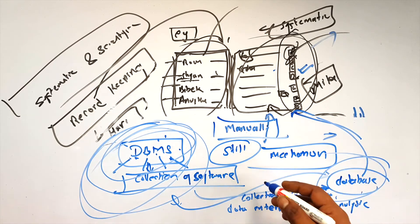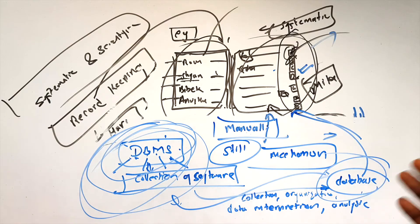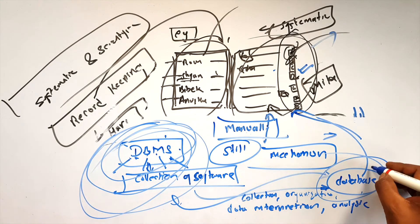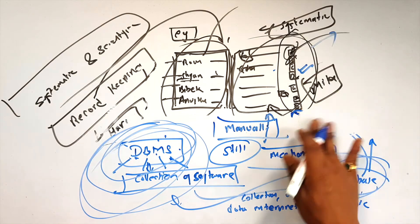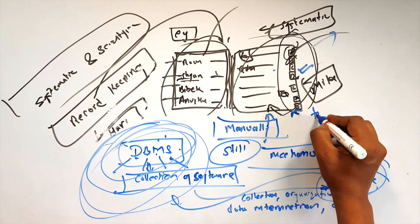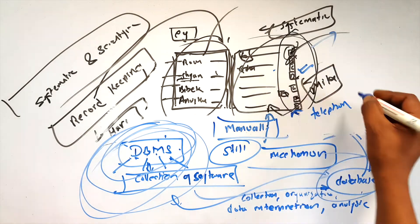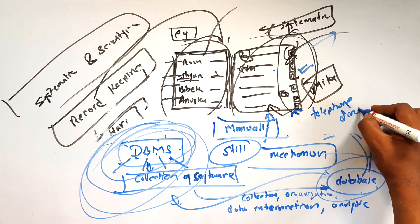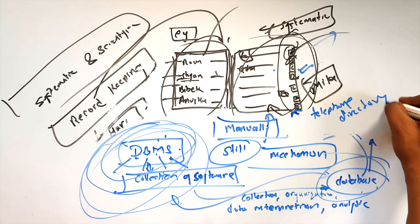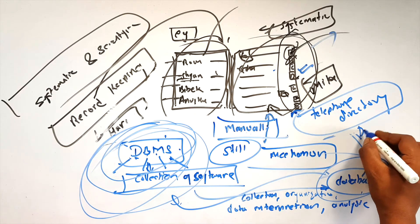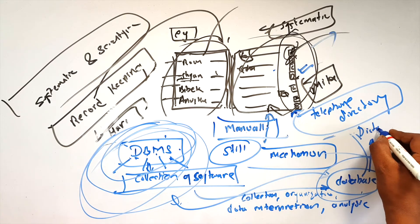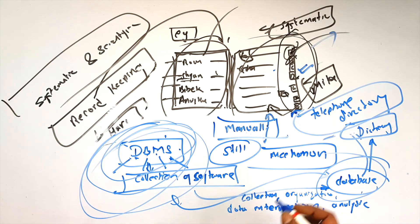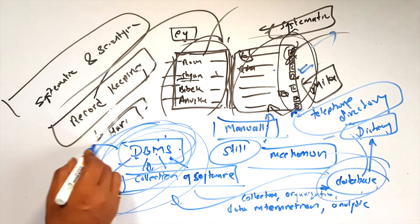A database is a systematic and scientific collection of data. An example of a database is a telephone directory. A telephone directory is a database. A dictionary is also an example — it is a book, it is a database collection. So database is the data, and DBMS is the software.